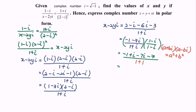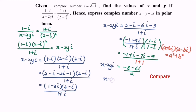Simplify the expression. We will have negative 8 minus 6i over 2. So where we will have x minus 2yi. Kindly compare the situation: x minus 2yi is equals to negative 4 minus 3i.